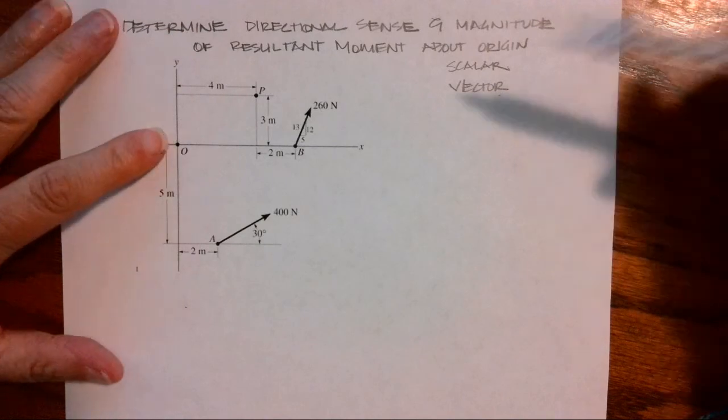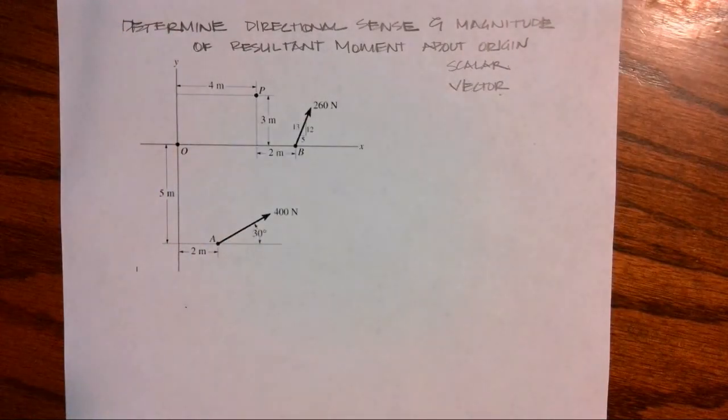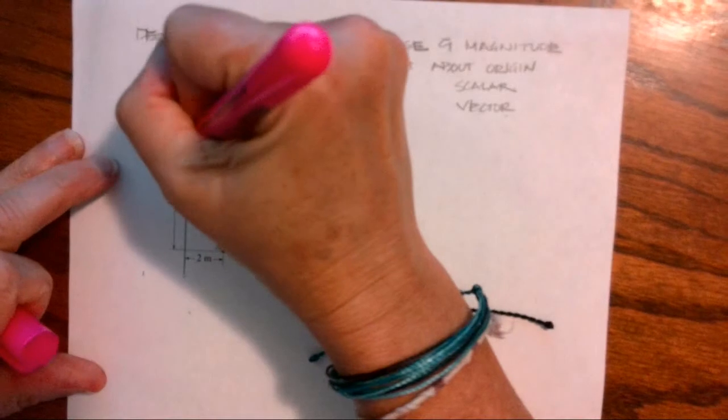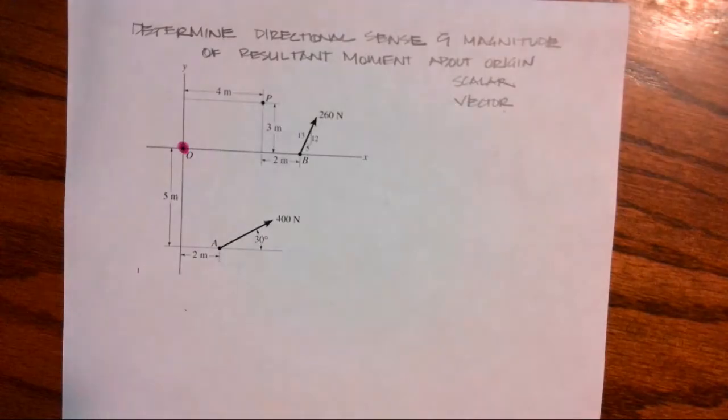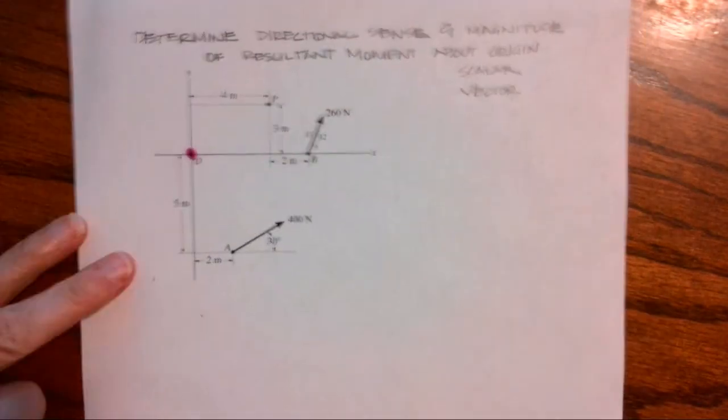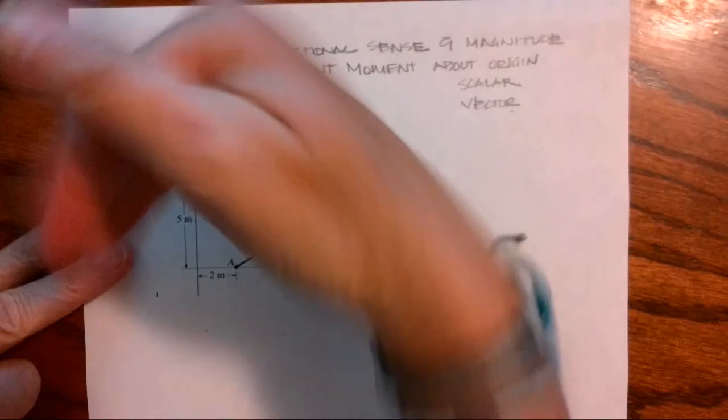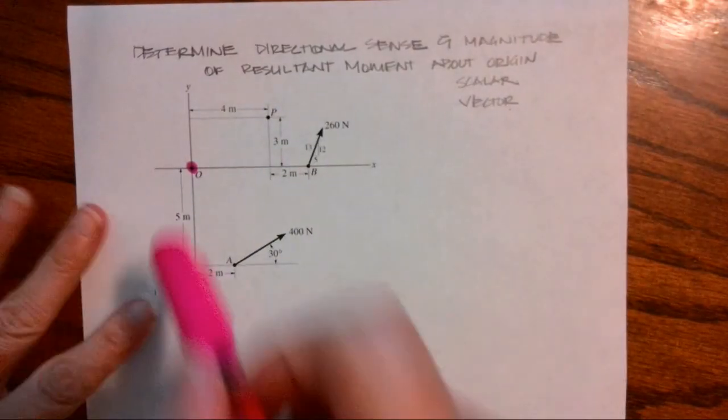So my origin is here and I'm going to put a pink dot on it so we can see where that is. And we want to figure out the magnitude and the direction of the resulting moment of these two force vectors about the origin.